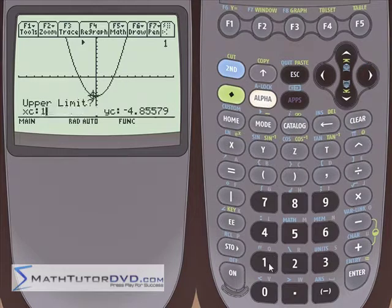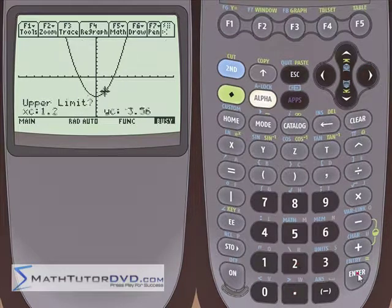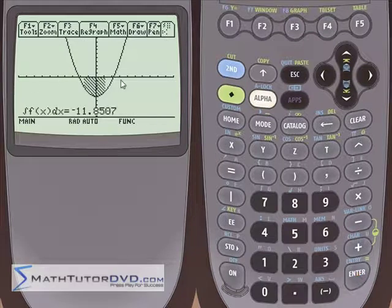And for the upper bound I can do anything I want. I can type in something, let's do 1.2. And we'll hit enter, and it's going to shade this. Now notice that the integral that we get here is negative.